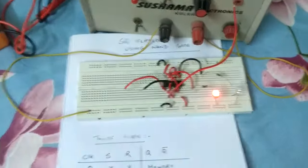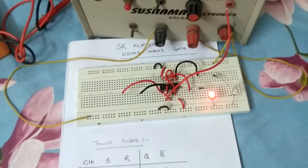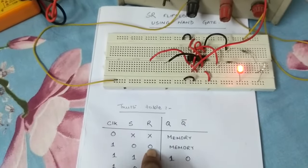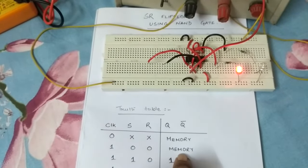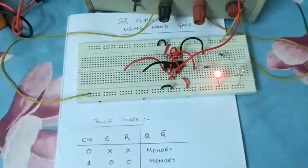Then you have something in memory. When I apply a clock pulse and I make S and R zero zero, then also the memory should be retained. Now keep in mind this wire is for Q and this wire is for Q bar.